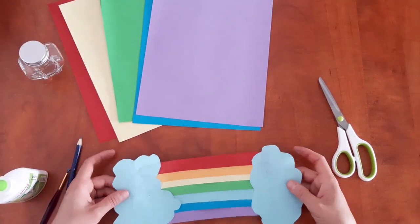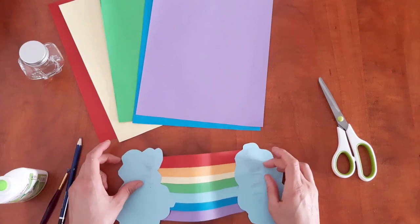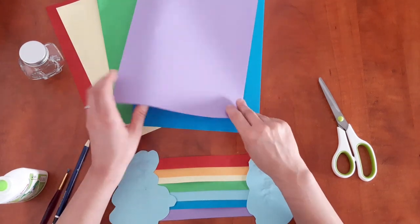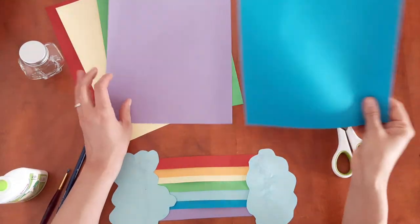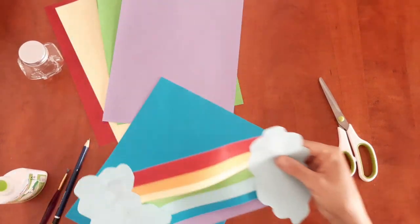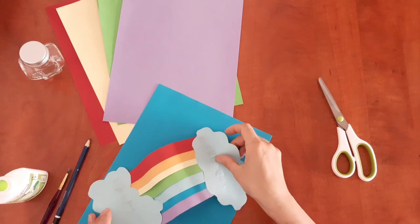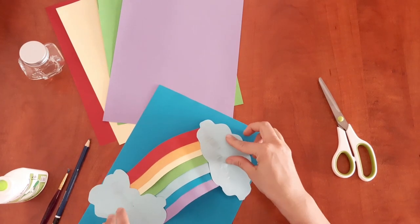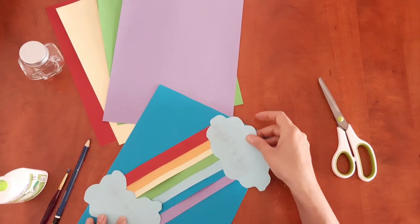Flip it on the other side, and this is how it will look like on our paper. We will take a blue paper like the sky, and we are going to glue the clouds.